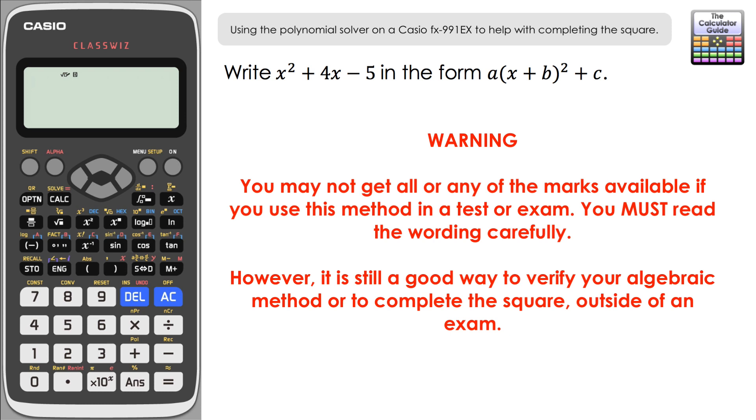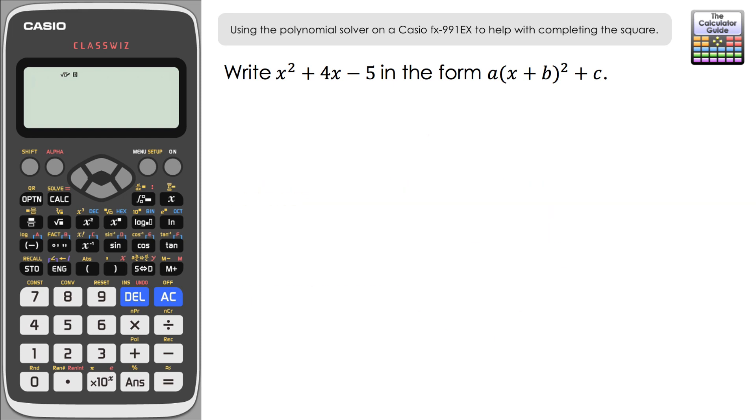Okay, so let's deal with this question. We've got to write this particular quadratic in the completed square form. Now let's just talk about the a. The a that we've got at the front there, the a is always going to match the coefficient, so the number in front of the x². Now if you don't see a number, like for example in this particular question x², that really just means 1x², so a would be 1, which means we don't have to write it in. We just assume there's one lot of and then we've got the bracket which will be (x + b)². So let's see if we can get the information from the calculator to fill in these other two missing values here, b and c.